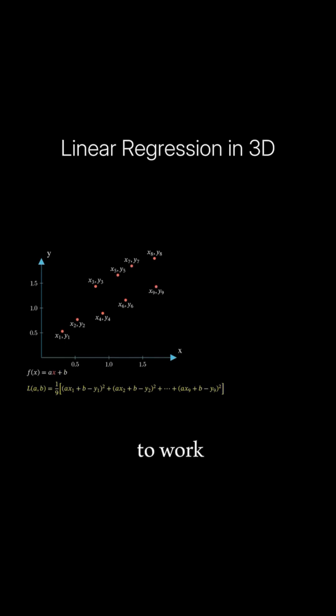For gradient descent to work, we will need derivatives with respect to a and b. We initialize a and b randomly, then calculate the derivatives and subtract them from a and b. This improves the fit of the line to the data. By repeating this process, we will get a better and better fit.